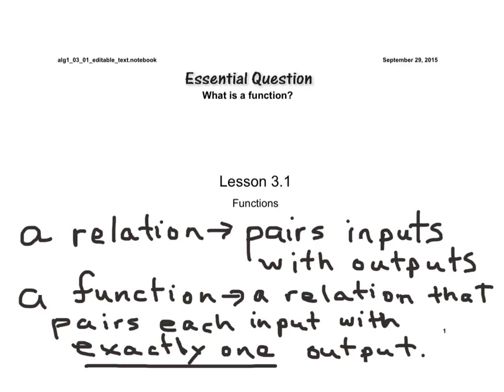If you look in your student journal, there'll be a page where we talk about vocabulary, and there'll be six definitions that we'll define throughout this video. The first one is a relation, and a relation pairs inputs with outputs, or it pairs an x value with a y value. A relation can also just be defined as any set of ordered pairs.